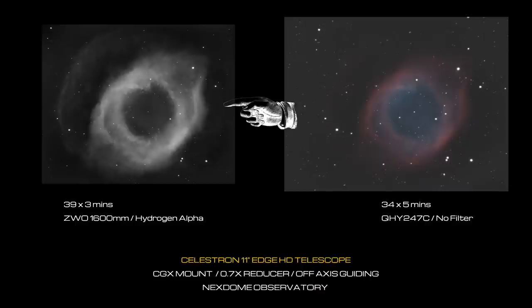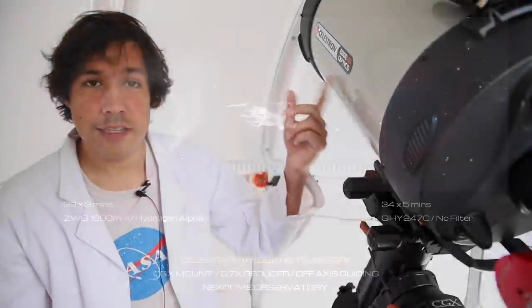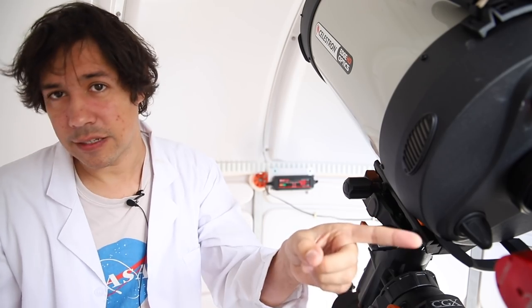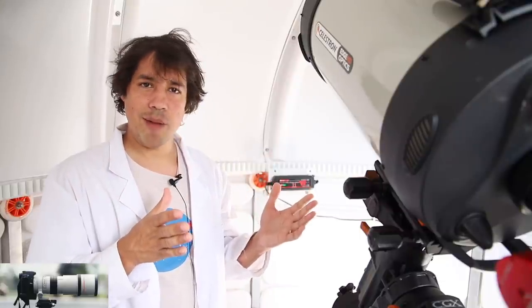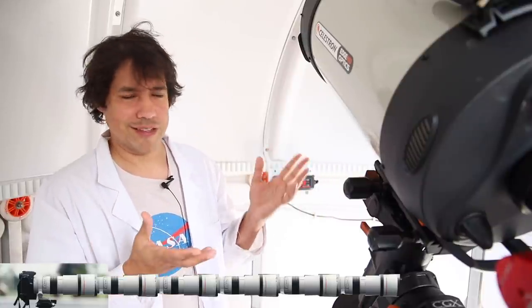And the color is taken with the beautiful QHY 247c. And if you're interested in the telescope side of things it's the C11 Edge HD with 0.7x reducer, the off-axis guider which gives us a focal length of about 1,960 millimeters. Think of it in terms of like if you had a 300mm lens on a camera, times that by six and you're getting closer to where we're at with this.